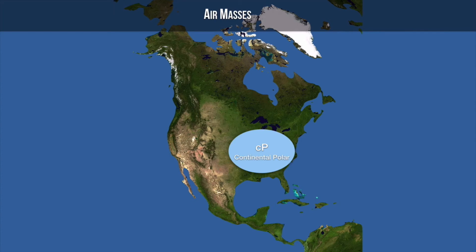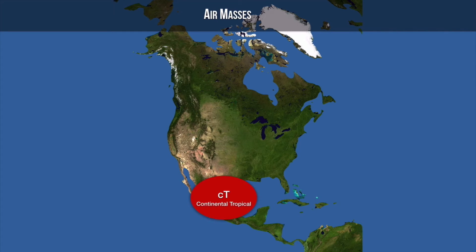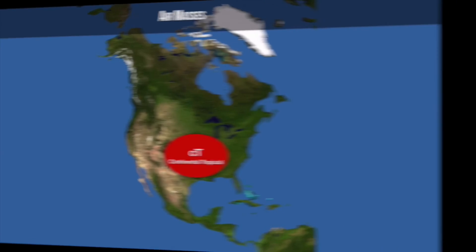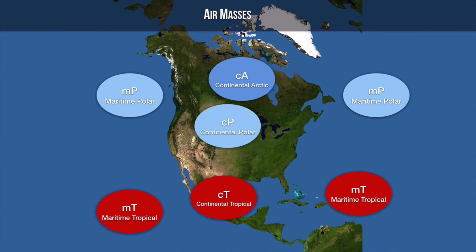And then there's one more air mass: the continental tropical. Continental means dry — it formed over land, not a lot of water vapor. And tropical means it's closer to the equator, so we're talking about much warmer air. That gets pushed up from Mexico into the central United States. These five air masses are what affect the weather in the United States on a day-to-day, week-to-week, monthly basis.